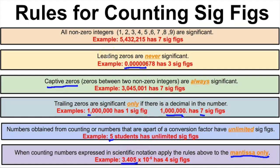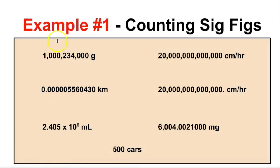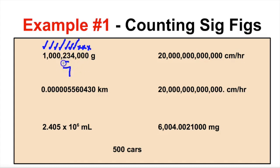Now that we know how to count sig figs, let's look at some examples. For this first number, the one is significant, the captive zeros are significant, the two, three, and four are significant, but the trailing zeros are not significant because there is no decimal in the number. So there are seven sig figs.